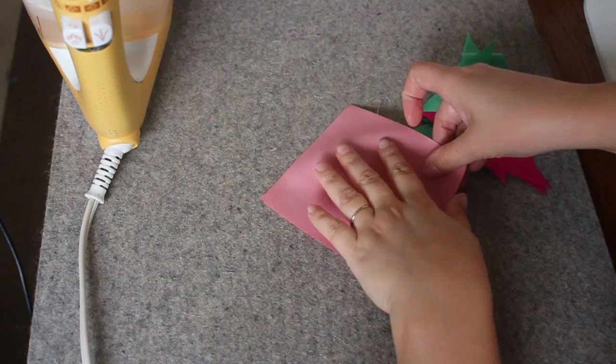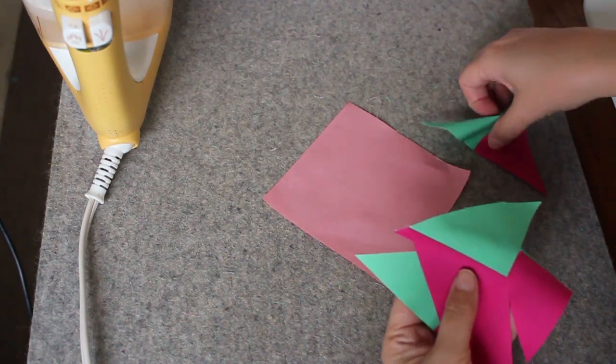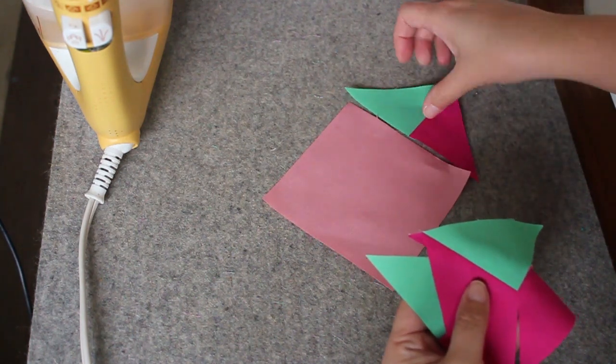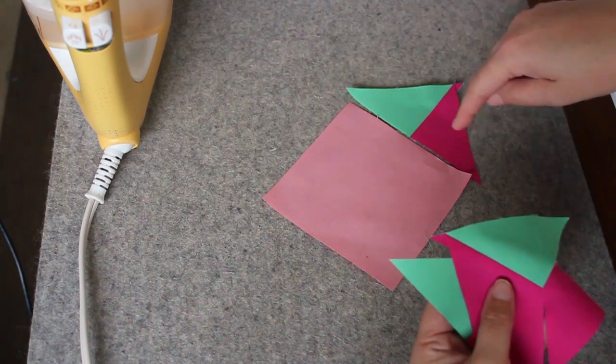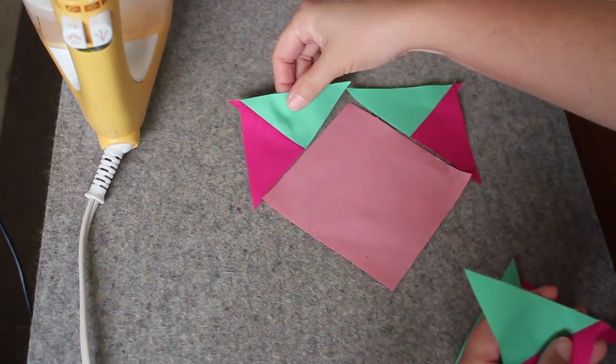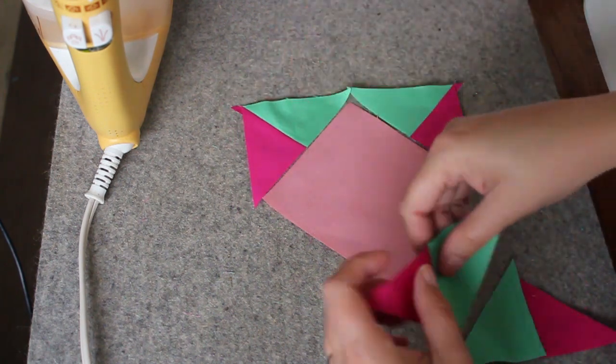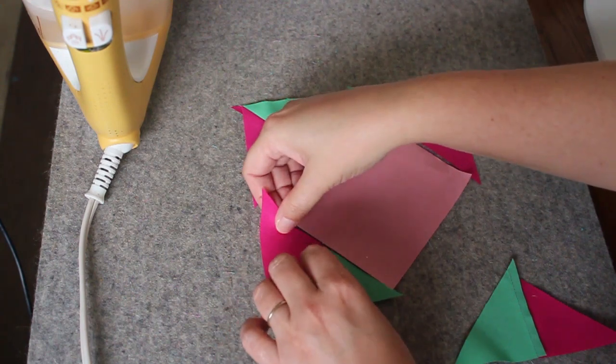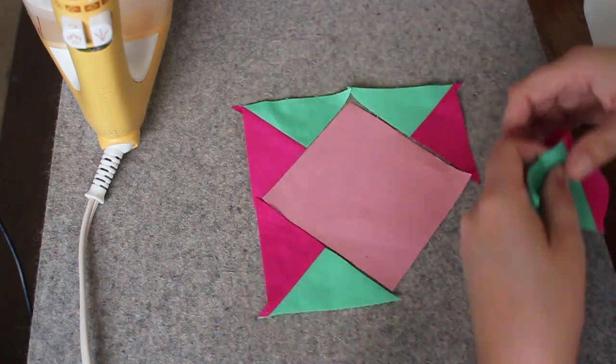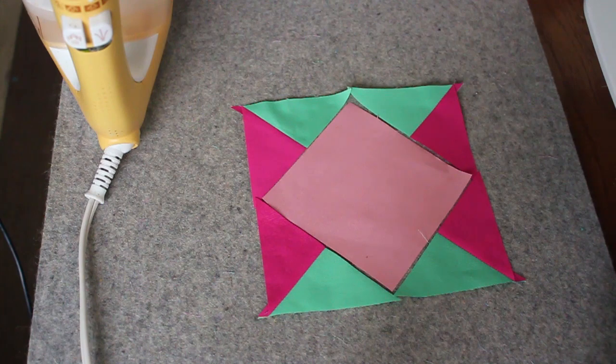So now we're going to lay out the block. You'll notice that these triangles stick far out beyond the edge of the square. And that is exactly, exactly what we want. Look at that.